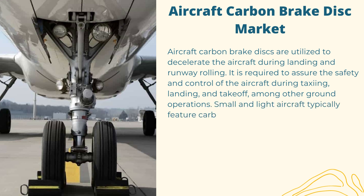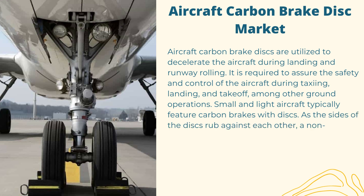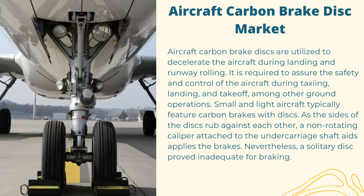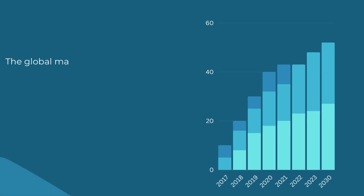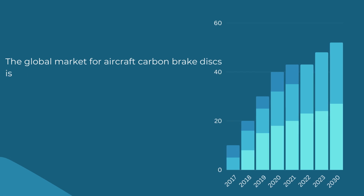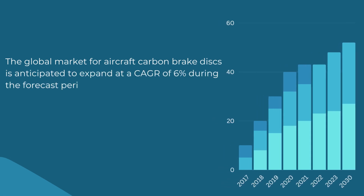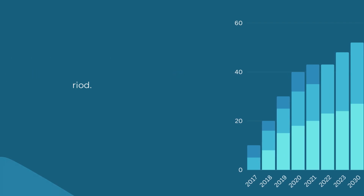Small and light aircraft typically feature carbon brakes with discs. As the sides of the discs rub against each other, a non-rotating caliper attached to the undercarriage shaft aids and applies the brakes. Nevertheless, a solitary disc proved inadequate for braking. The global market for aircraft carbon brake discs is anticipated to expand at a CAGR of 6% during the forecast period.